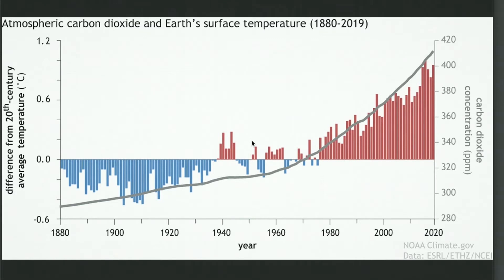On the left vertical y-axis we have the difference from the 20th century average temperature measured in degrees celsius. On the right-hand vertical y-axis we have carbon dioxide CO2 concentration levels measured in ppm — parts per million. This should work just as well as two separate charts ranged one above the other.